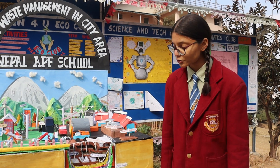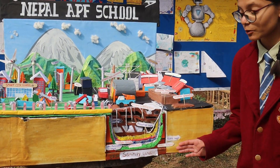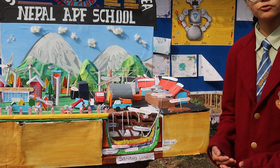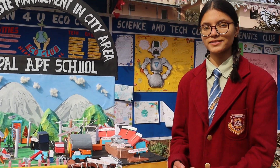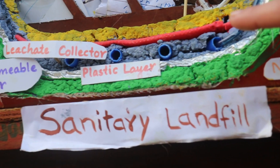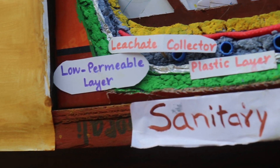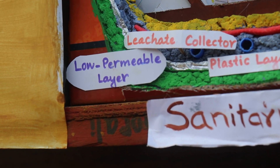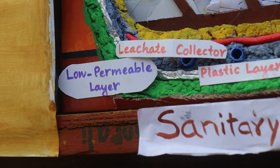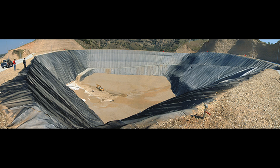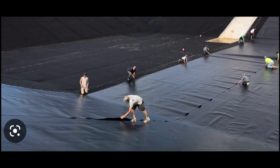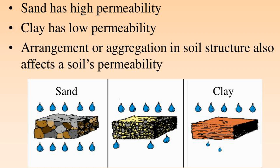In order to protect the native subgrade from contamination with leachate in case of sudden leakage, plastic layers and low permeable layers are constructed. The plastic layer is constructed using HDPE and the low permeable layer is constructed using clay.